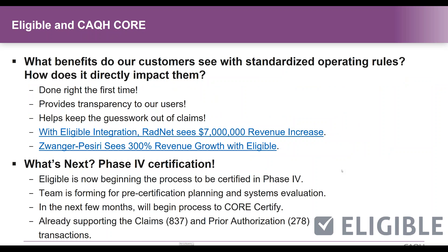By following the CORE standard operating rules, we make sure that all transactions submitted to the payer are done right the very first time. This makes everything easier and quicker for our customers. The rules help to provide transparency to our users — they know right away that we are communicating with the payers in the most efficient and effective manner. Due to this standardization, we can quickly submit real-time 270-271 eligibility transactions to payers and provide our users incredible, valuable insight, which can then be used to properly bill their patients. Two great examples are RadNet and Zwanger, which are companies with multiple locations nationwide, and both have seen astronomical increases in revenue.